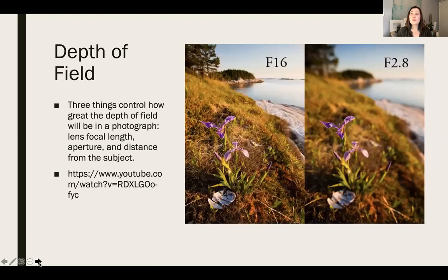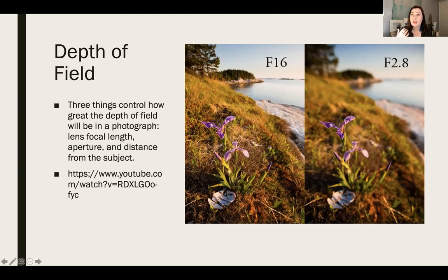Now you know the names for what you've been seeing. When everything is in focus, we say the image has a deep depth of field — many things are in focus. The difference is made by adjusting aperture, which corresponds to the sensation of depth of field. These two example photos were taken with the same camera at the same time of day but with a different aperture. The second has a shallow depth of field — the focal plane is very small, centered on the flower, while everything else is blurry.